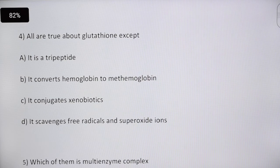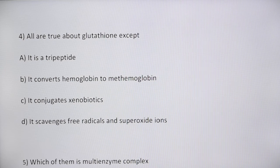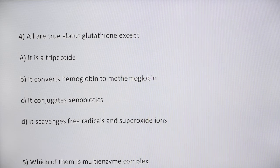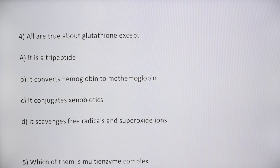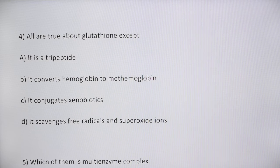Next question: all are true about glutathione except — it's a tripeptide; it converts hemoglobin to methemoglobin; it conjugates xenobiotics; or it scavenges free radicals and superoxide. Glutathione is a tripeptide conjugating agent that helps in phase two conjugation reactions, and several xenobiotics — foreign drugs or substances — undergo detoxification by conjugation with glutathione.